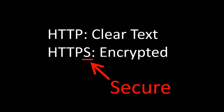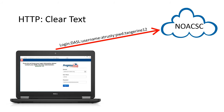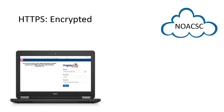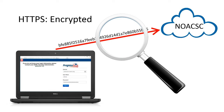Think of the S as meaning a secure connection. If I were to connect to ProgressBook at NOACSC and used clear text HTTP, anything I sent would be in the open — someone could see exactly what I'm typing. But if I use HTTPS, my computer runs an algorithm that encrypts that information so it doesn't look like any particular data. In fact, if someone were to intercept it, it would look like gibberish.